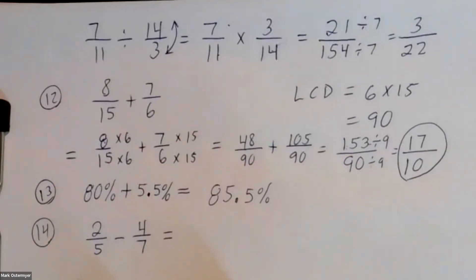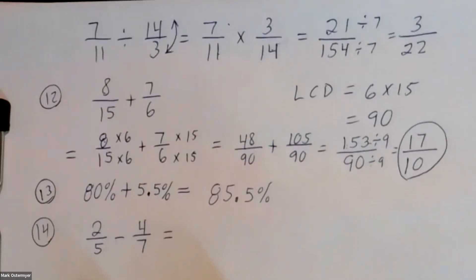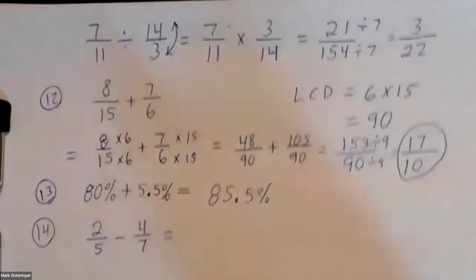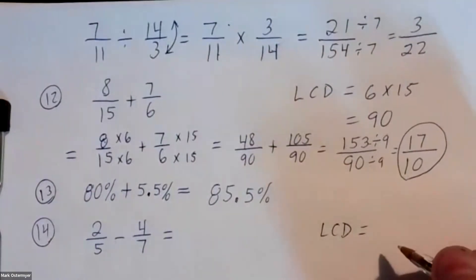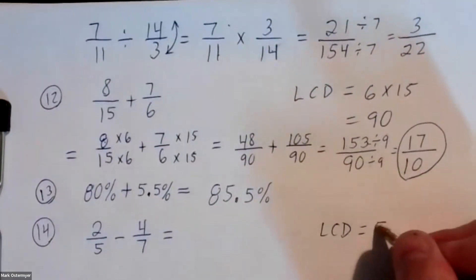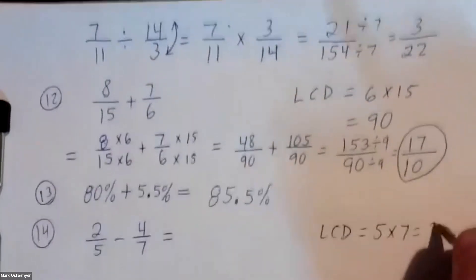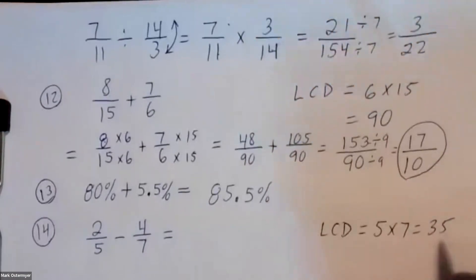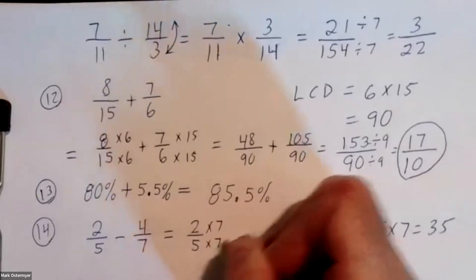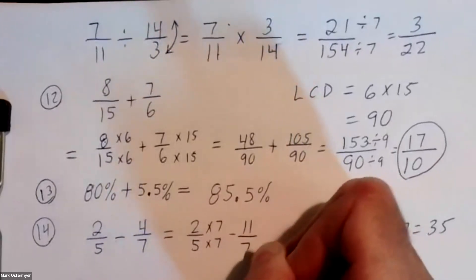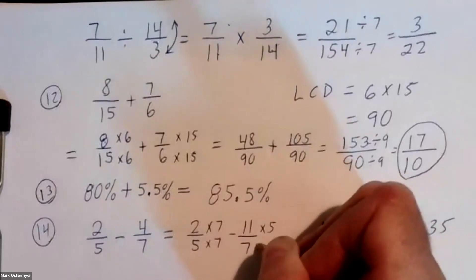Now you've got two fifths minus four sevenths. What would be a common denominator? Five times seven works, which is thirty-five. So this two fifths gets multiplied by seven over seven, and four sevenths gets multiplied by five over five.